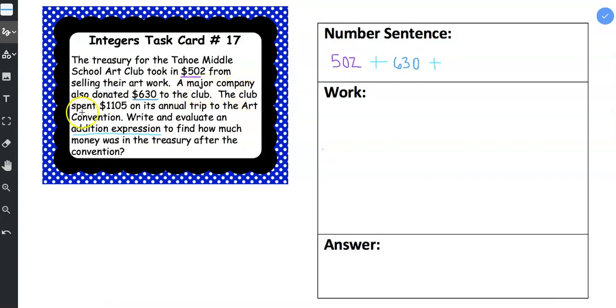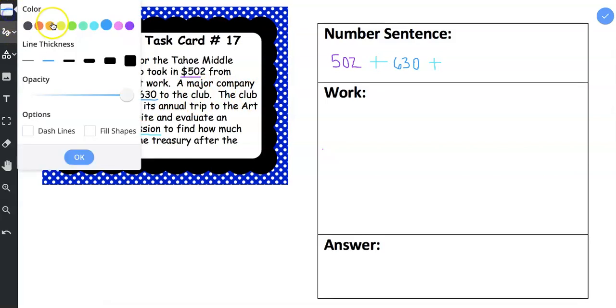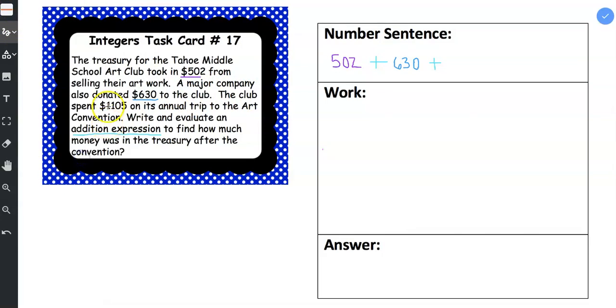Then it says the club spent. If the club spent that money, $1,105, that's a decrease so I'm going to write that as a negative number.